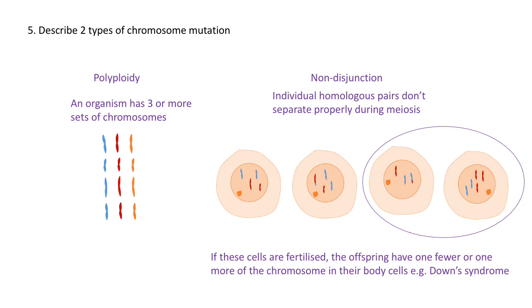An example of this in humans is Down syndrome, where individuals have an extra chromosome 21. So that is meiosis and chromosome mutations.